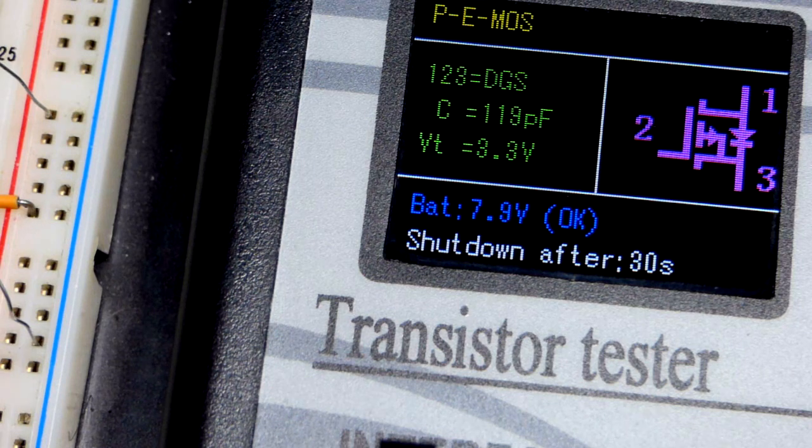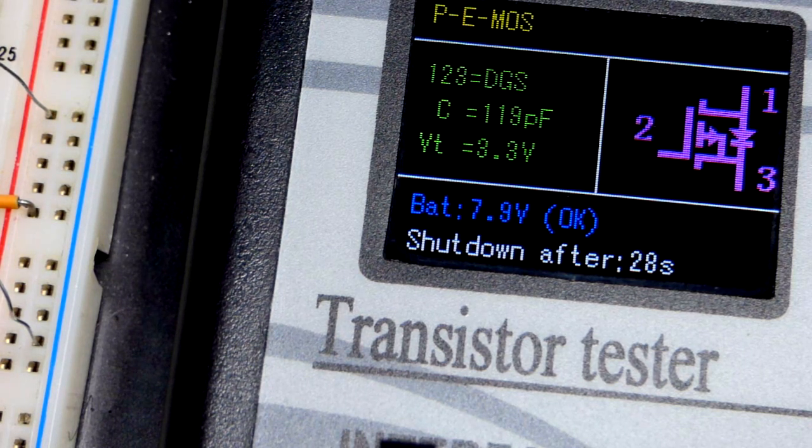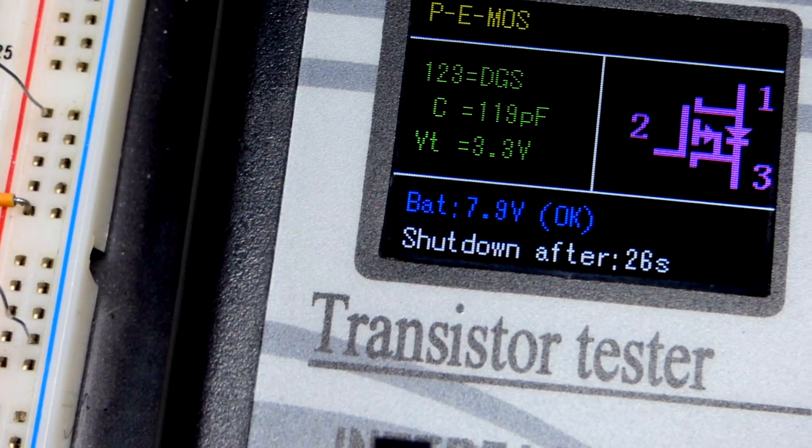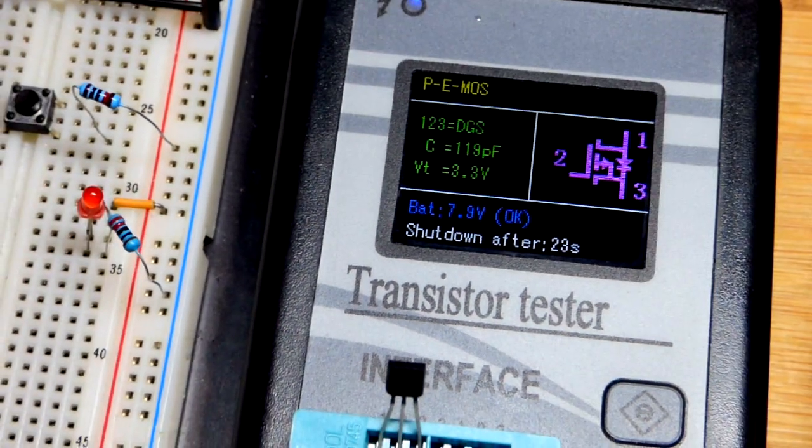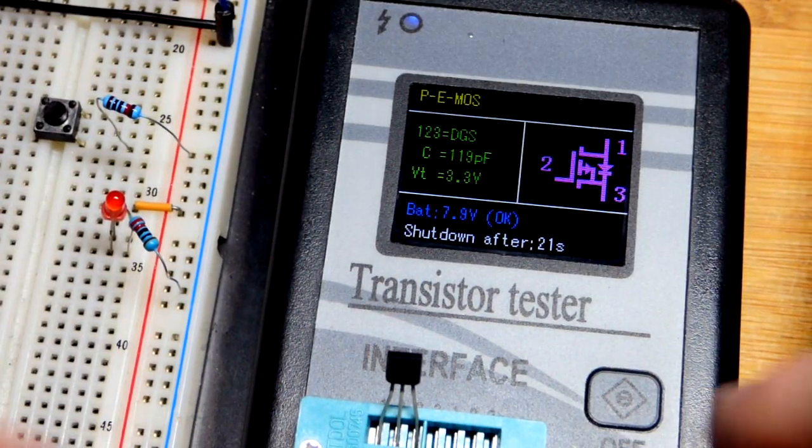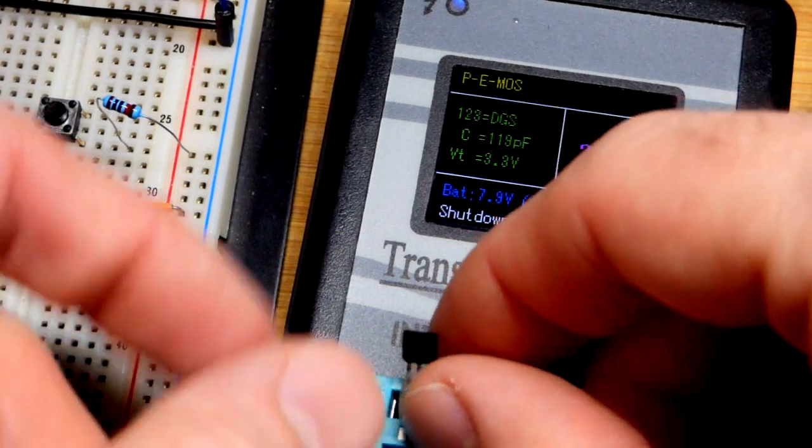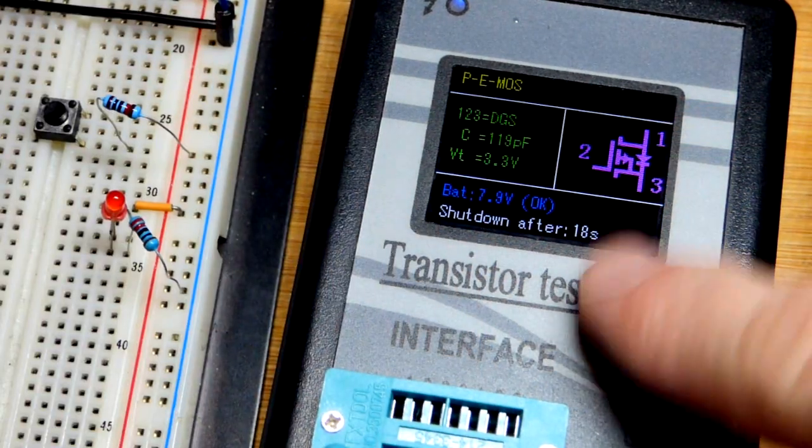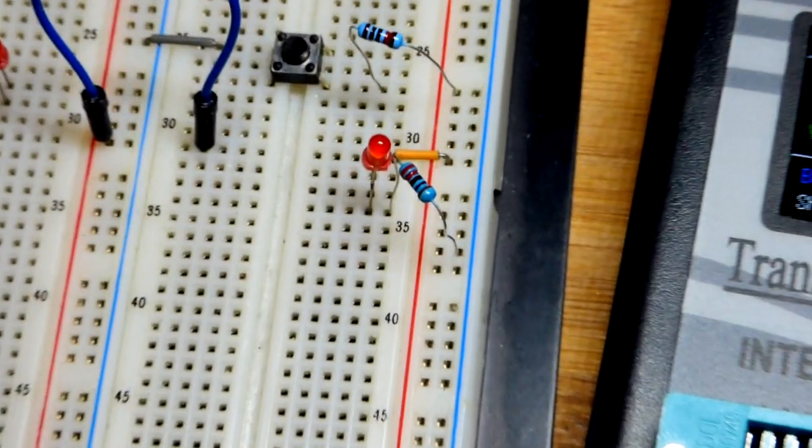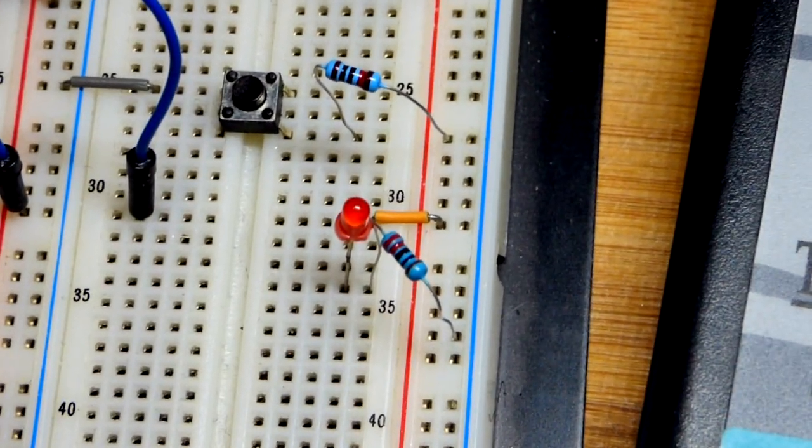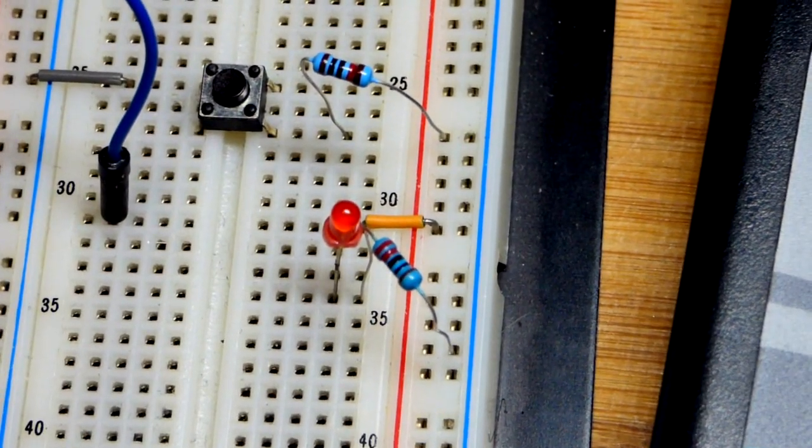The gate is the pin that controls how well the drain to source conducts. For this circuit we're going to switch on the high side of the load. Here we have the LED and a protective 220 ohm resistor. I'm using a 5 volt power supply.